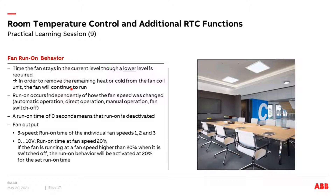The run-on behavior means that the fan stays in the current level if a lower level is required. For example, when the fan is in speed number three and we switch it off, it stays in fan speed number three for several seconds, then fan speed number two, then fan speed number one — to blow out the remaining heat or cold from the fan coil unit. This is also a feature which I want to show you later.